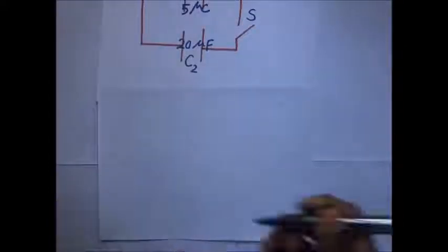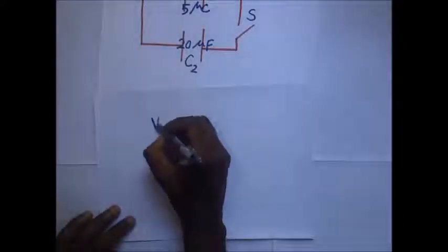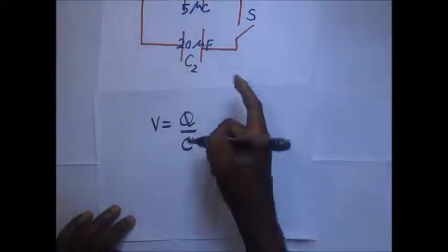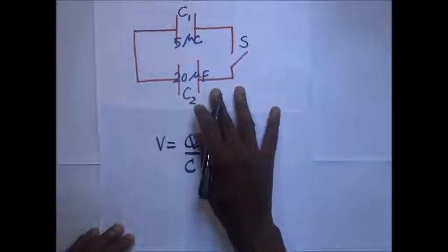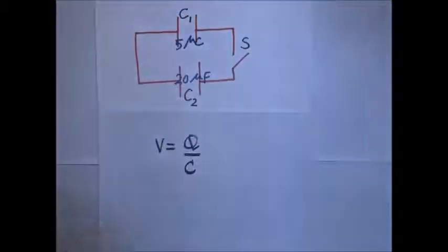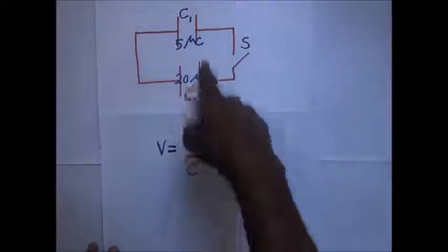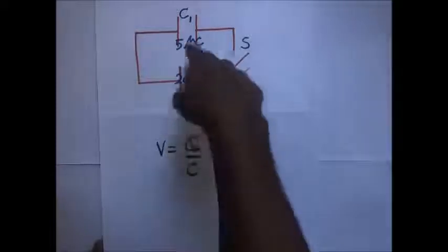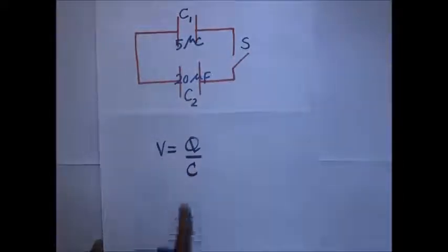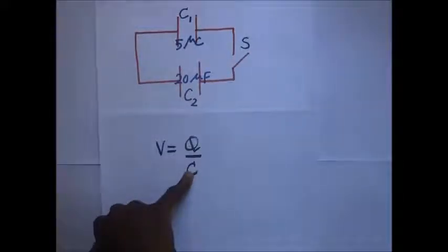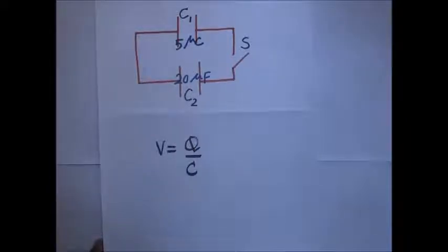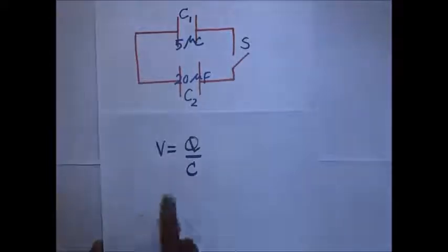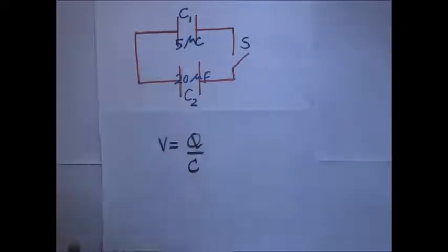To find the final potential difference, we know that V equals Q over C. To find the effective potential difference across each capacitor, we need to find the total charge in the whole circuit and the effective capacitance of the whole circuit. We do not yet know the effective capacitance or the total charge in the system, so we need to find Q and C first.